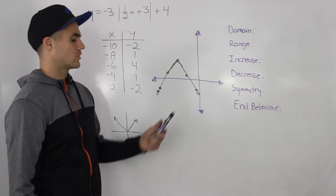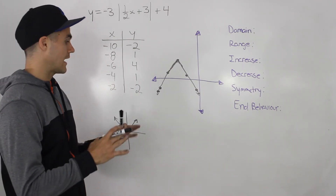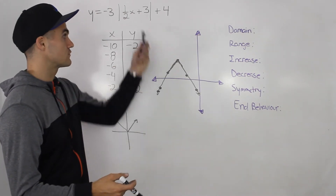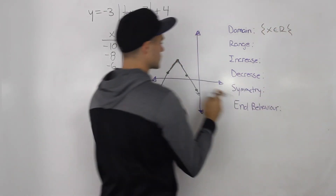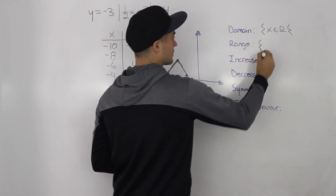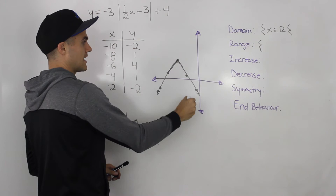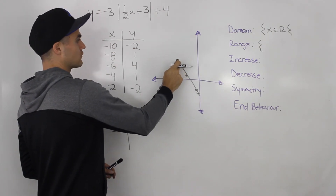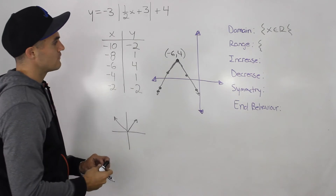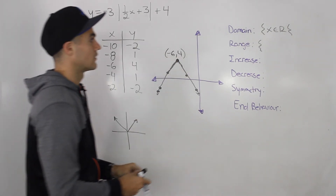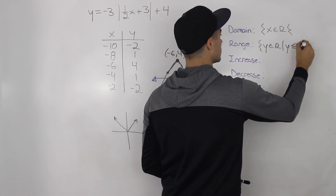Now let's list the properties. The domain of any absolute value function or transformed absolute value function is always all real numbers — x can be anything, no restrictions. For the range, this function opens downward and the vertex is at negative six, four. All y values are less than or equal to four, so the range is y is an element of real numbers such that y is less than or equal to four.